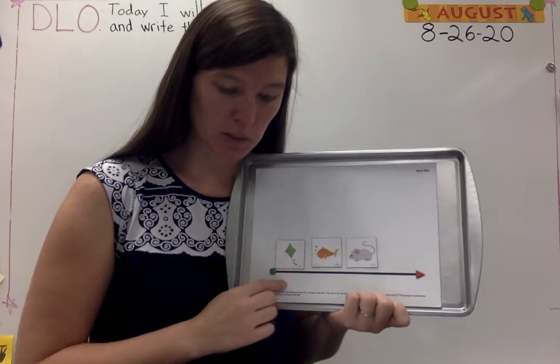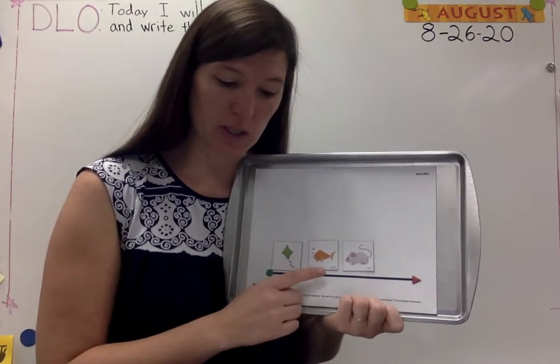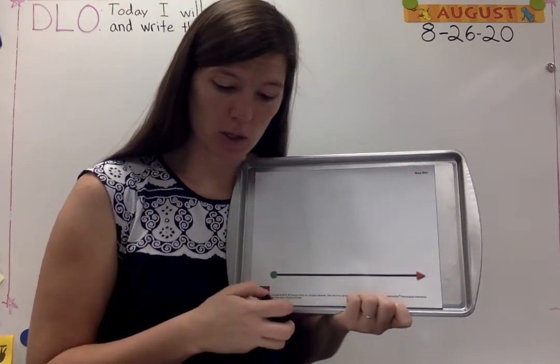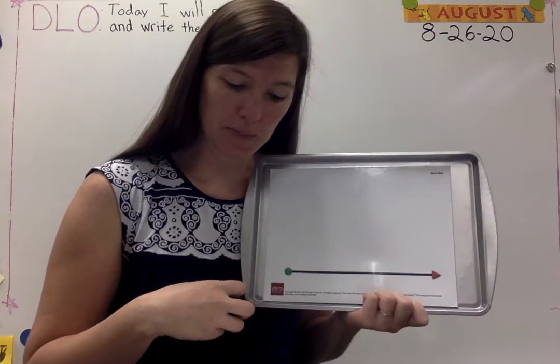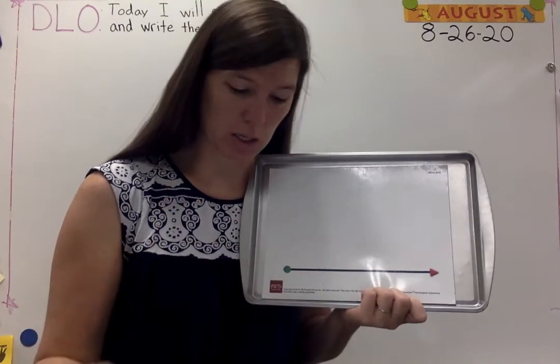Now the word at the beginning is mouse. The word at the end is kite. The word in the middle is fish. Let's do another one. You'll answer with me. I'll show you three words and say them. I'll ask you which word is at the beginning, at the end, or in the middle.